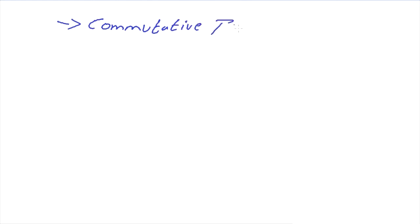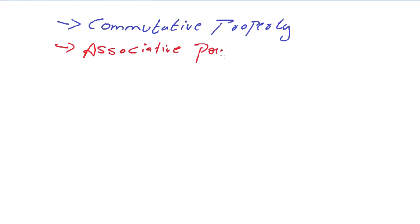In this video, let us learn about the properties that were left in the previous unit. The properties are: commutative property, associative property, and distributive property.